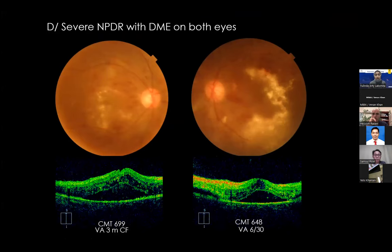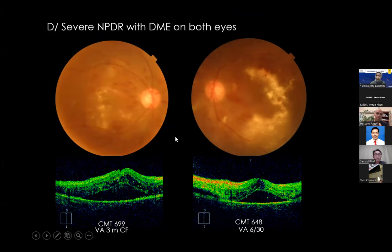On clinical examination, we found hemorrhage, a lot of exudate. On OCT we diagnosed the patient with severe non-proliferative diabetic retinopathy with diabetic macular edema. The central macular thickness was over 600 microns in both eyes.